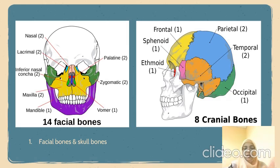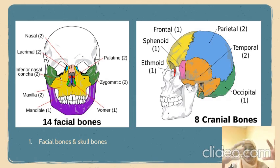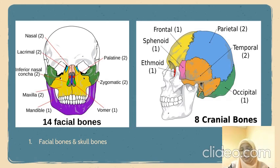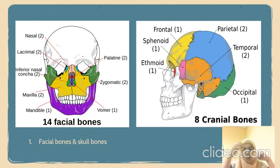The temporal bone is a pair of irregular bones located under each parietal bone. The orange color in the diagram shows the temporal bone, of which we have two — one on each side.